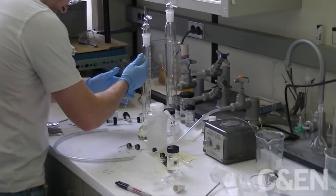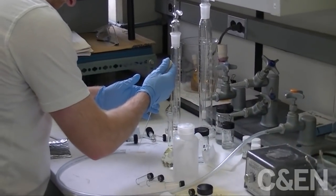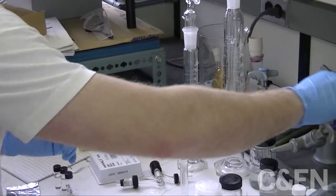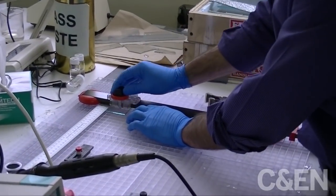Every lab tweaks the procedure to suit its research focus, but many of the steps are common to all researchers studying perovskite cells. These solar cells, or photovoltaic cells, are typically made in a layer-by-layer fashion on a specially coated glass support.